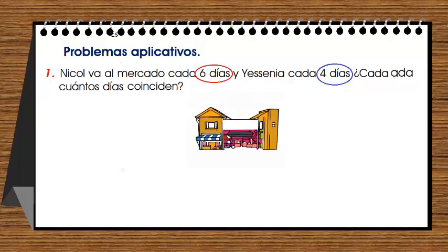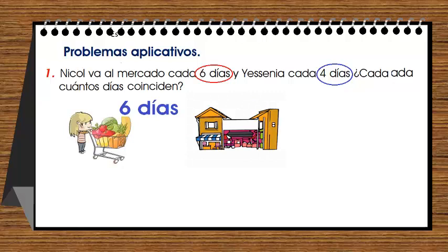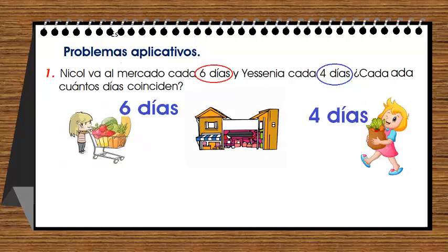Tenemos el mercadito: Nicole cada seis días y Yesenia cada cuatro días. La pregunta dice: ¿cada cuántos días coinciden? Va a haber un día en que ambas personas van a ir juntas.